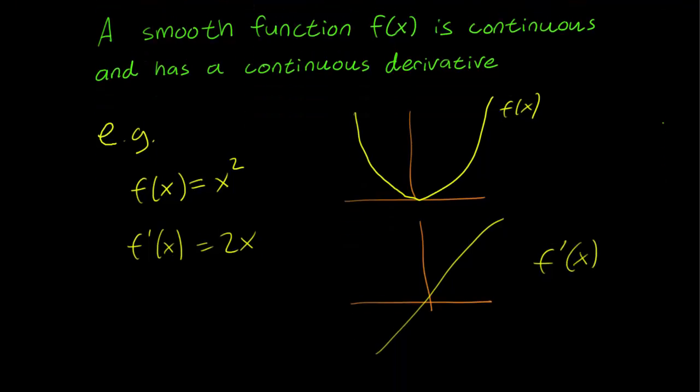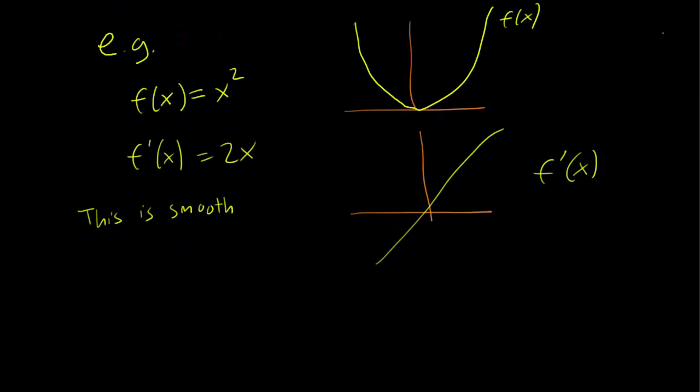We conclude that this is smooth because it is continuous and its derivative is also continuous. Now let's consider another example.